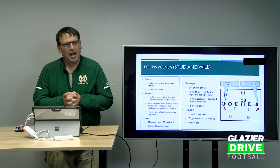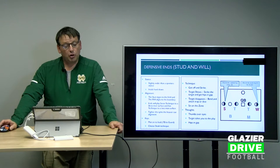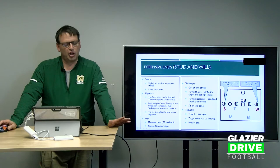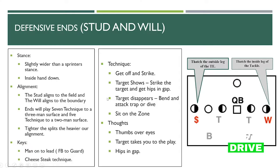Our defensive ends, stud and will — we don't have eight deep on our defensive line, so some of our tackles play end and some ends play tackle. Our stance is slightly wider than a sprinter's stance, inside hand down. Our stud will always align to the field and our will will always align to the boundary. Our ends have to learn to play a seven technique to a three-man surface and a five technique to a two-man surface. One of our alignment keys: the tighter their splits, the heavier we align; the wider their splits, the looser we are.